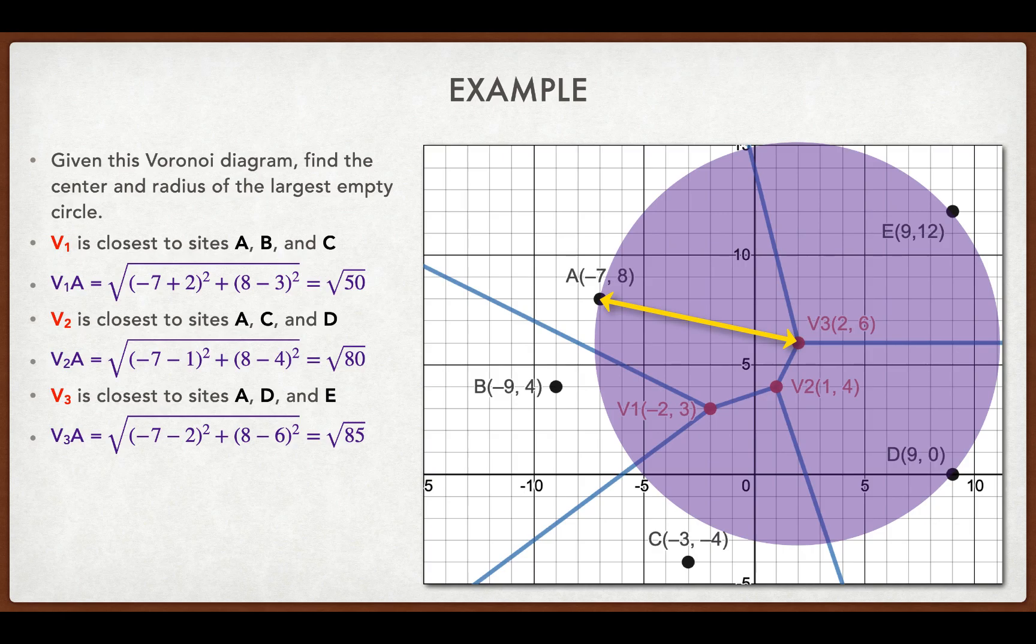And so I'm going to find the distance there using the distance formula again. And since A is involved, I'm going to find the distance to site A. And that distance is the square root of 85.